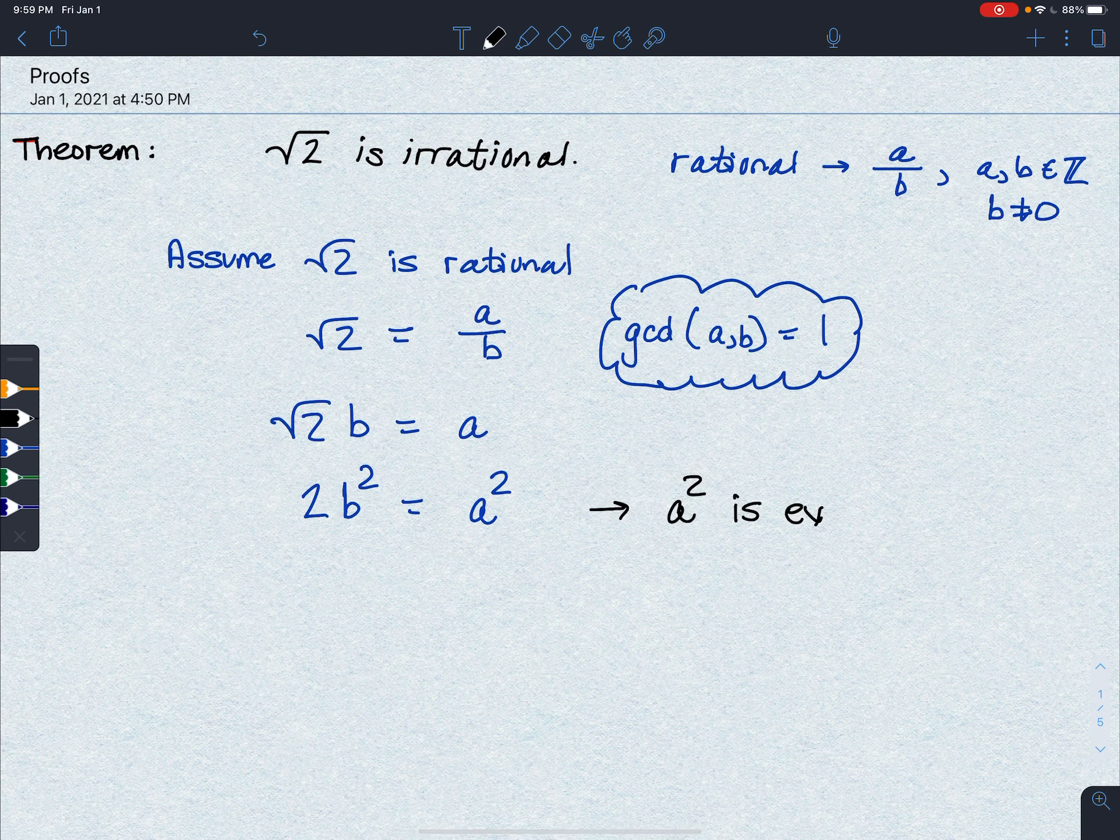But wait a minute. We've run into a problem here. Up here, we said that a had to be even. And here that means that b is even, which means that the greatest common divisor of a and b is an even number.